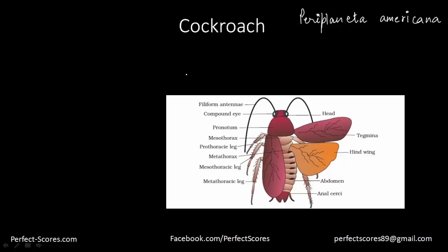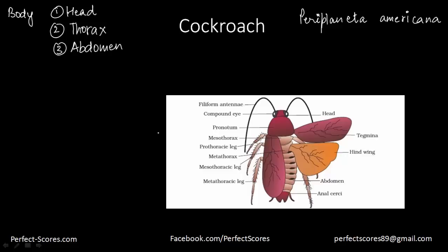Periplaneta americana is about 35 to 55 millimeters long and the wings extend beyond the tip of the abdomen. The body of the cockroach is divisible into three main areas: the head region, the thorax, and the abdomen. The entire body is covered by a hard exoskeleton made up of chitin — a chitinous exoskeleton.